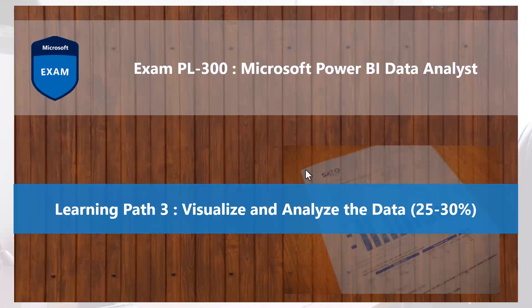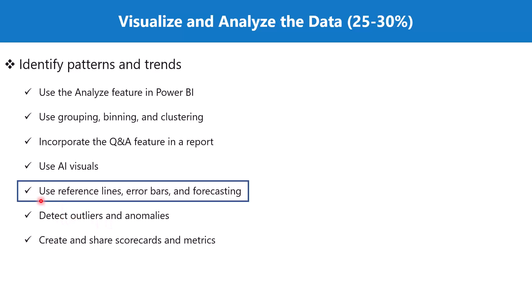Bismillah Rahman Rahim. Hello everyone, welcome back to the PL 300 exam preparation series where we are exploring the third learning path: visualize and analyze the data. In this video we are going to explore the topic 'use reference lines, error bars, and forecasting', which is part of the section 'identify patterns and trends'. These are techniques which help you identify patterns and trends and improve your analysis.